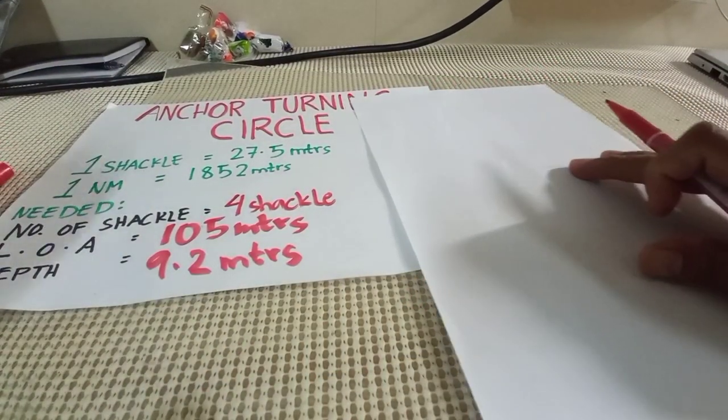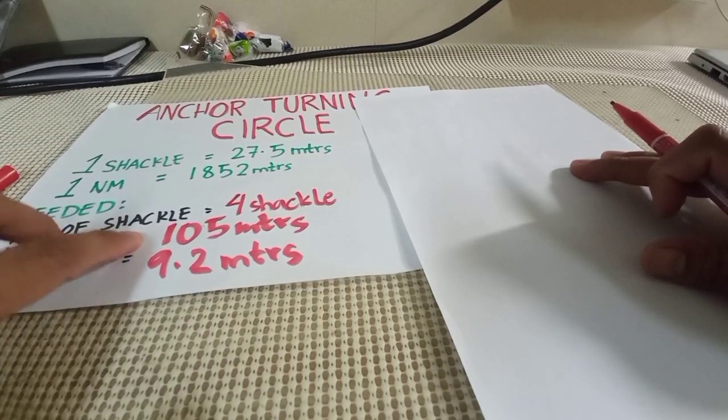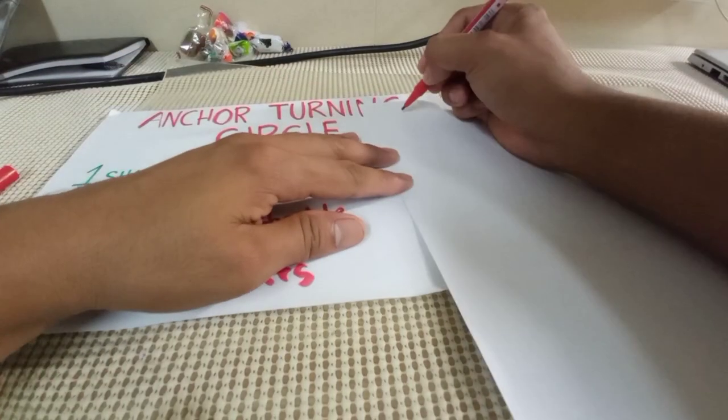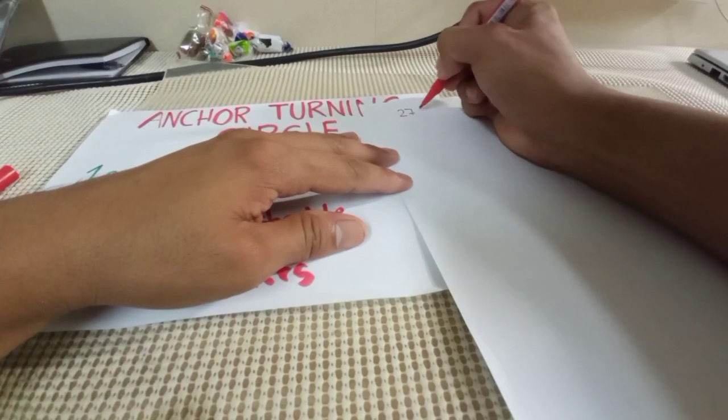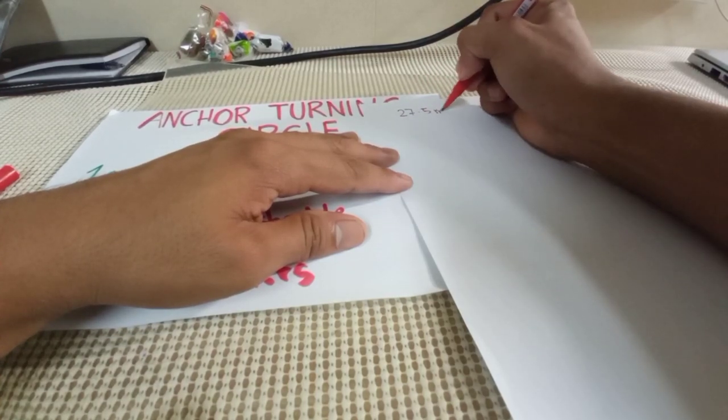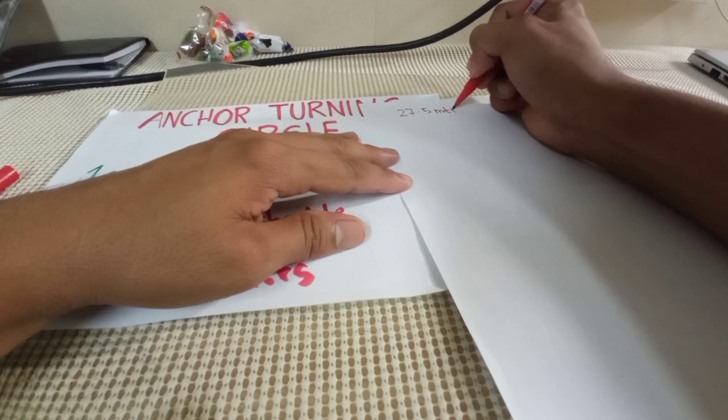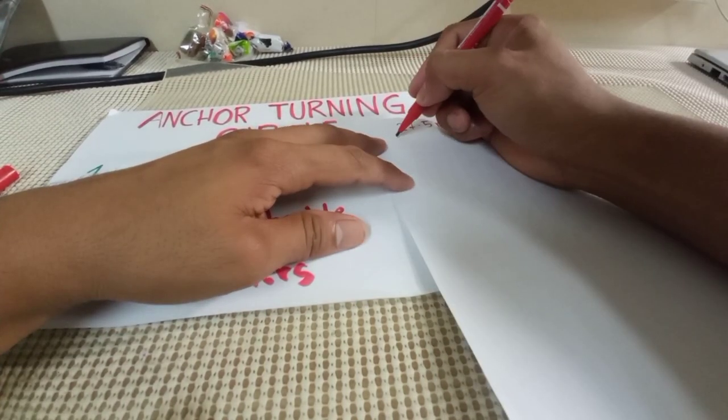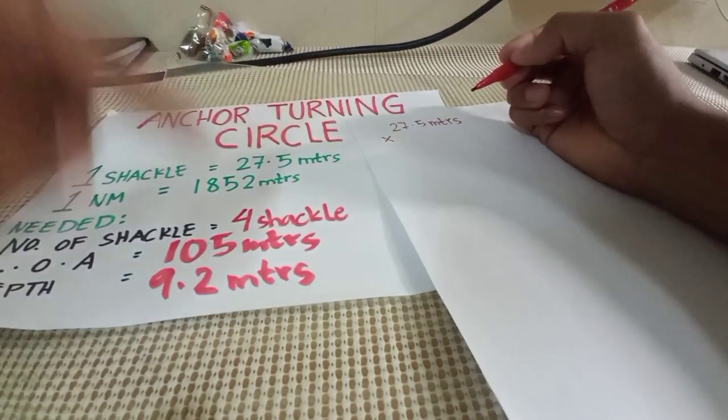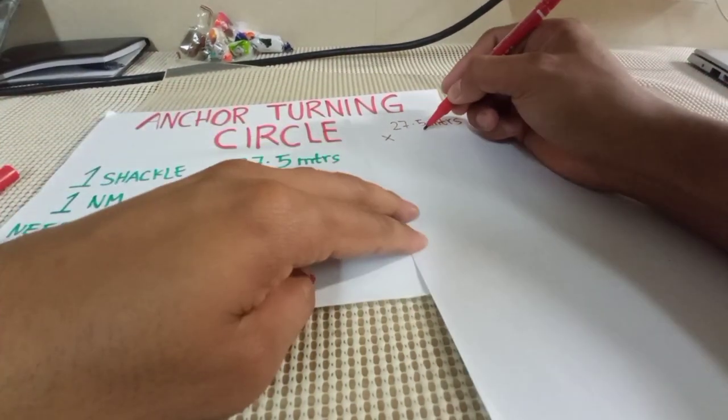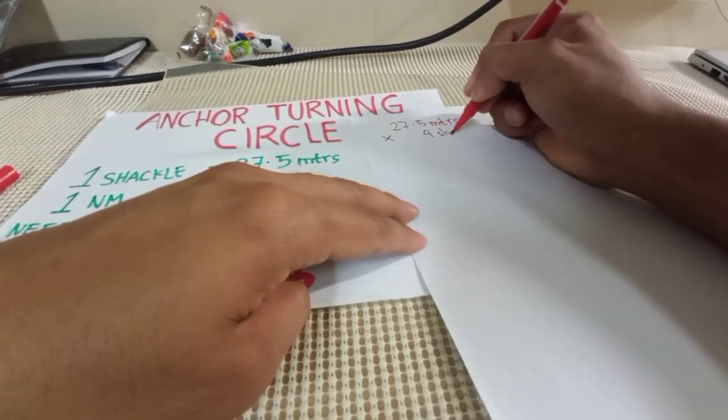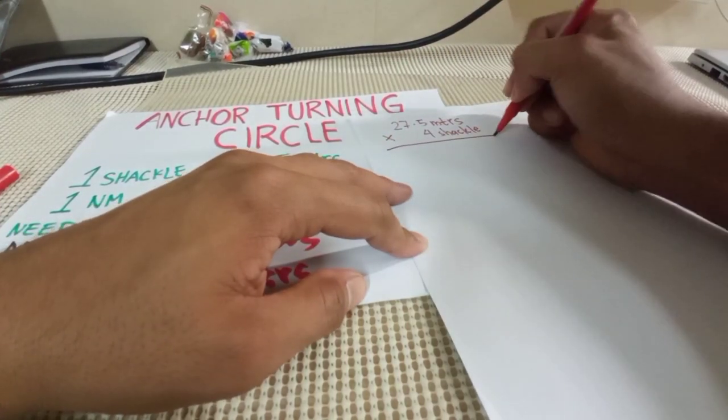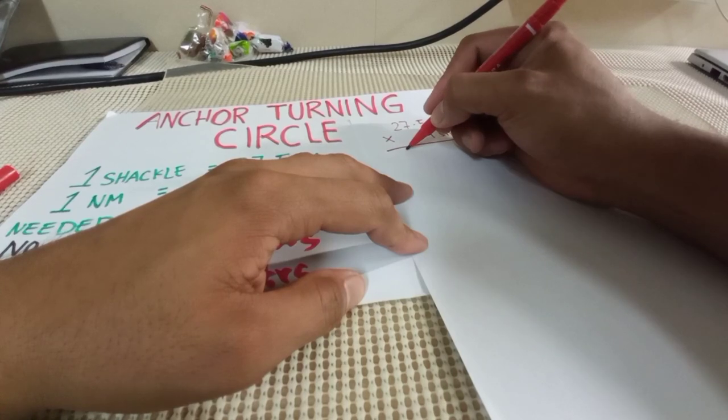So first, we have to multiply the number of shackle to 27.5 meters. So 27.5 meters. 27.5 meters multiply to 4 shackle.